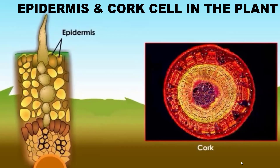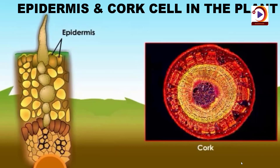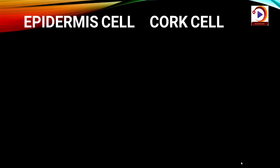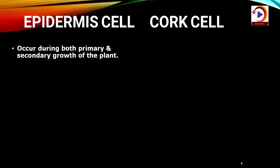There are two permanent tissues which are protective in nature. One is epidermal and the second is cork. Epidermal cells cover the entire plant body during primary growth, whereas cork cells cover the stem and root of the plant after secondary growth. I will be discussing both epidermal and cork cells together through a comparison.